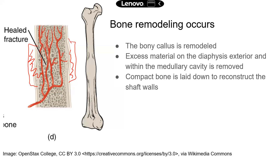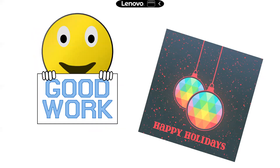So those are the four steps in bone repair. Hopefully now you're familiar with what's happening at each step. Even if you don't remember the exact information, familiarity with the steps will hopefully help you select the correct answer. Good job everyone — you just learned a little bit more and are more prepared for the TEAS. This might be the last video before the holiday break, so if I don't make another video, I wish you a happy holiday and enjoy the time with family and friends.